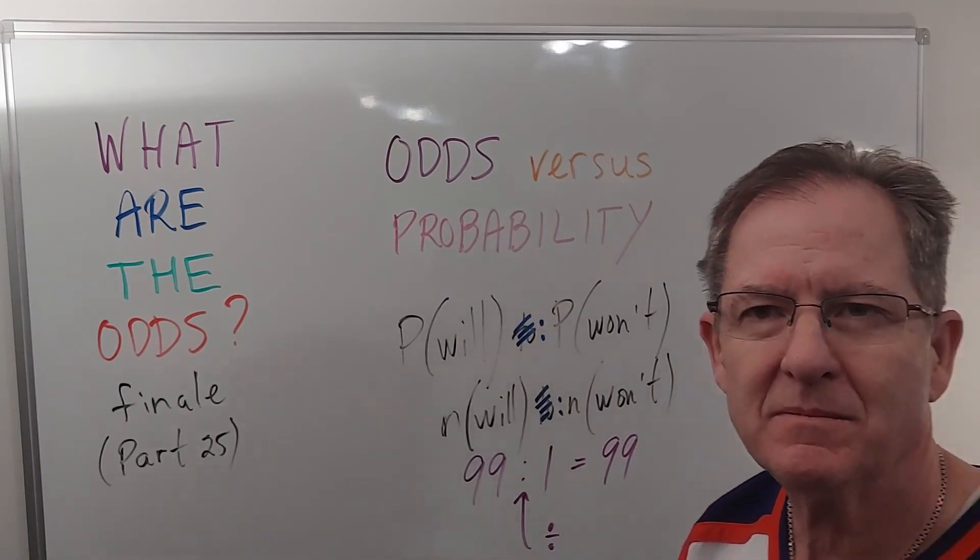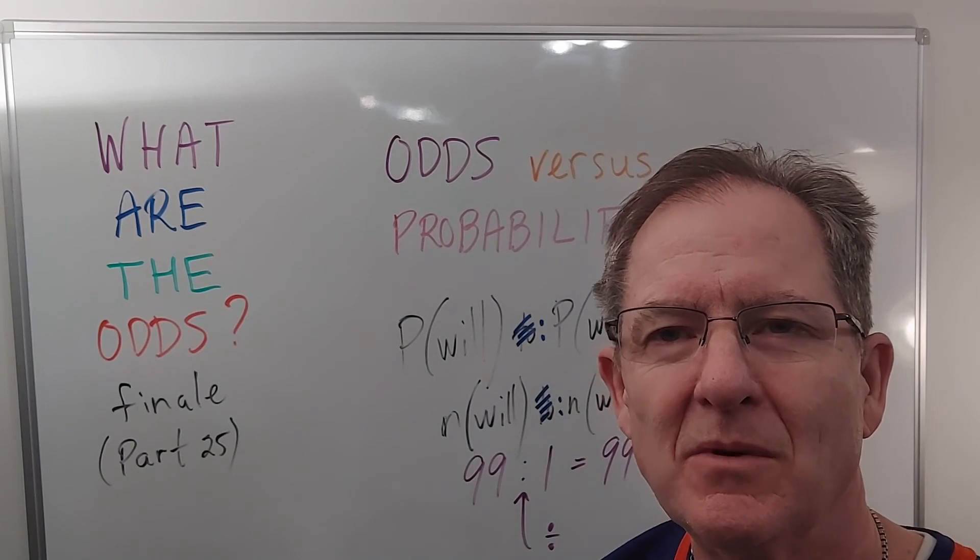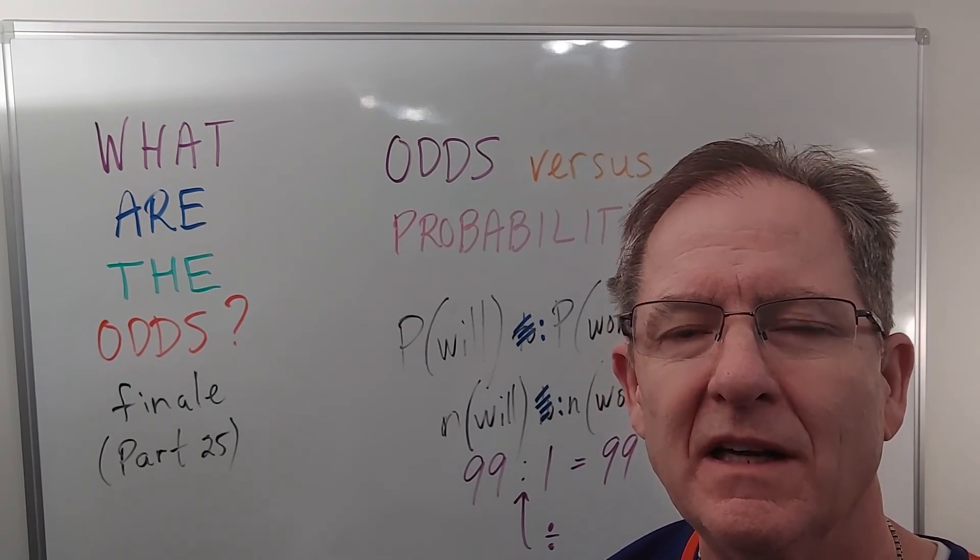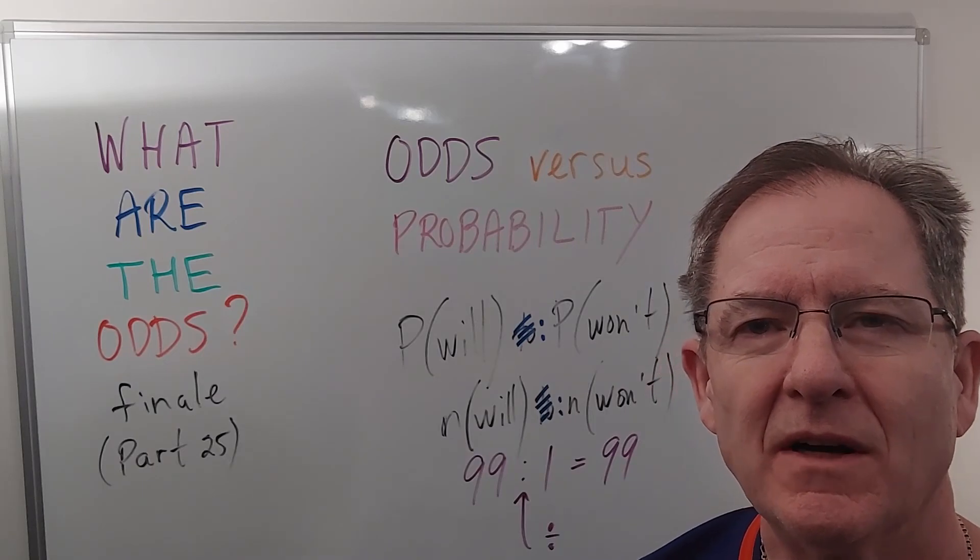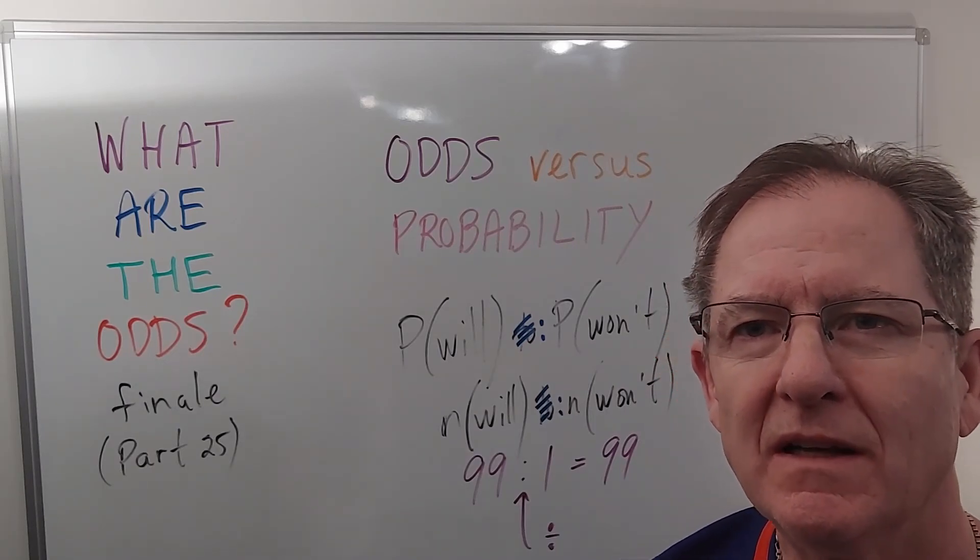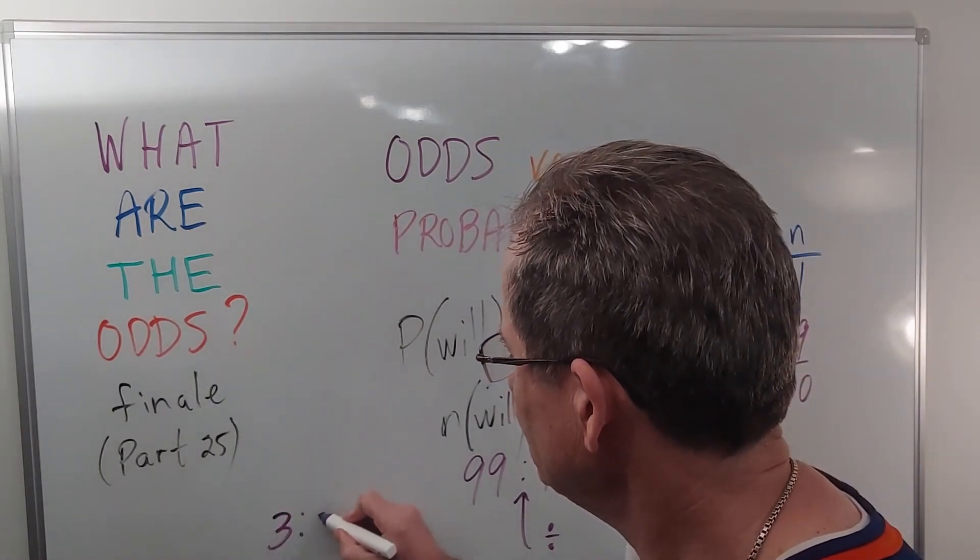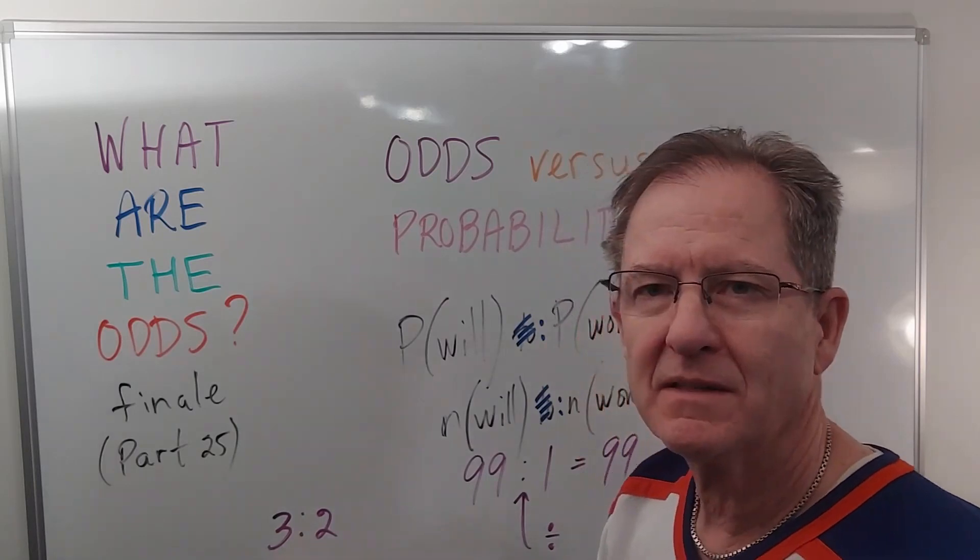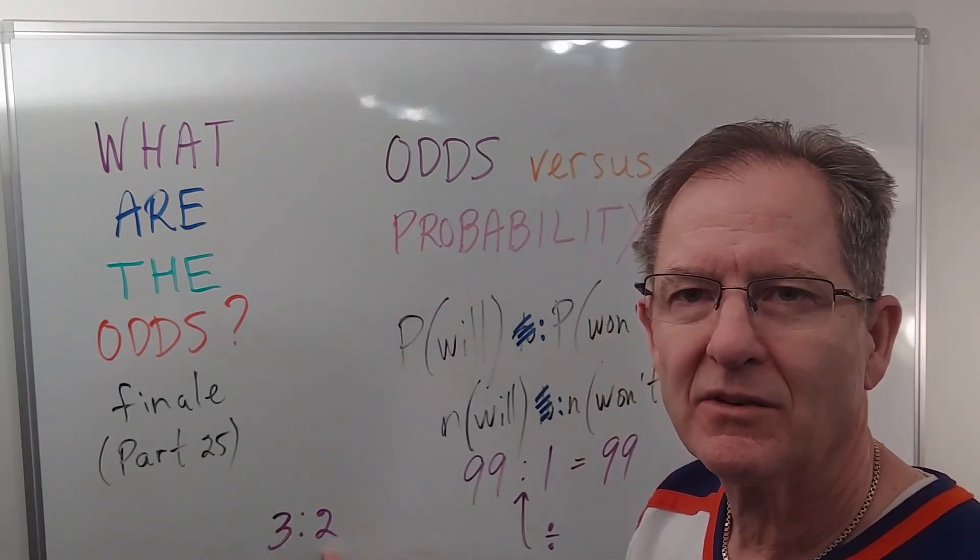I wasn't intending to talk about odds in this series. It was mostly about probability leading up to permutations and combinations. But that gives you an idea what odds are. So especially in sporting events, when they give the odds of someone winning, let's say three to two, they're three times as likely to win as they are to lose. That's the general idea.